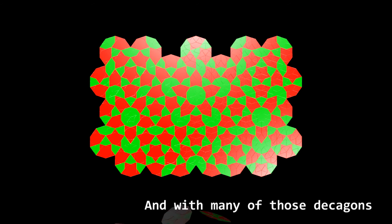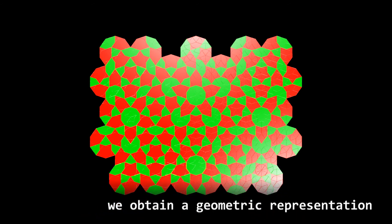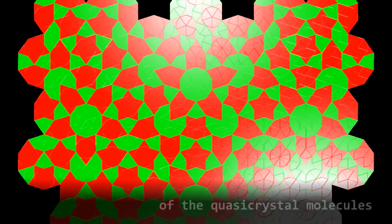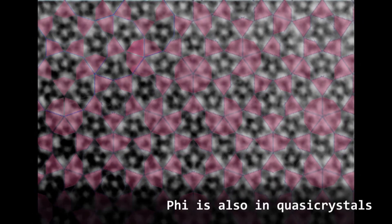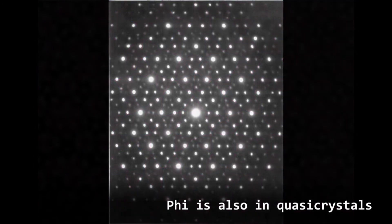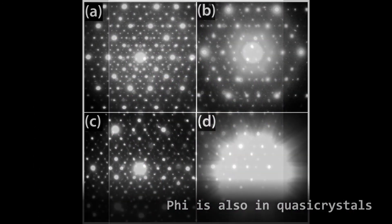And with many of those decagons we obtain a geometric representation of the quasicrystal molecules. Phi is also in quasicrystals.